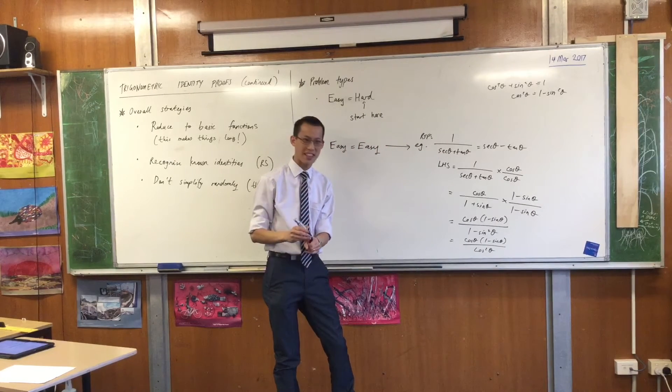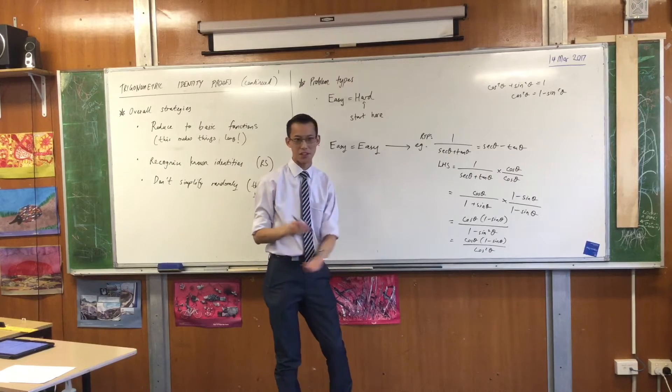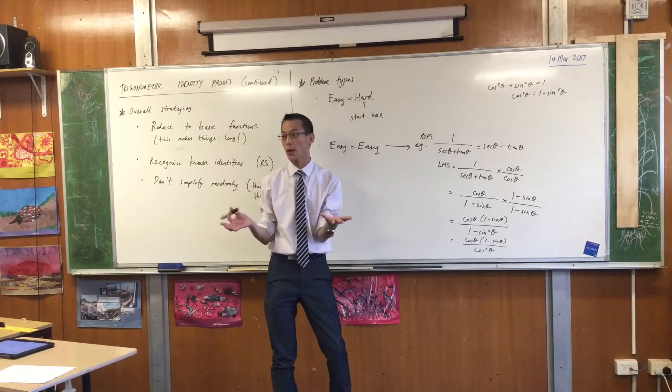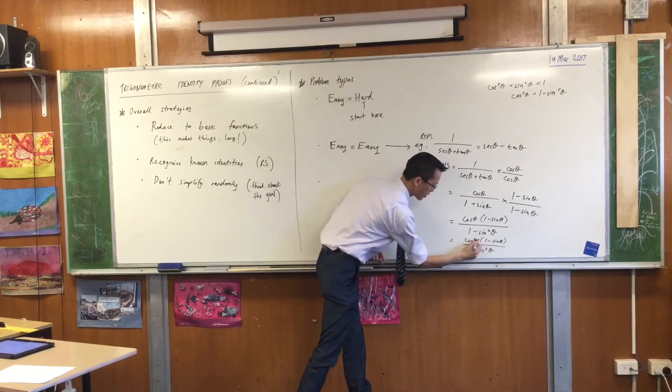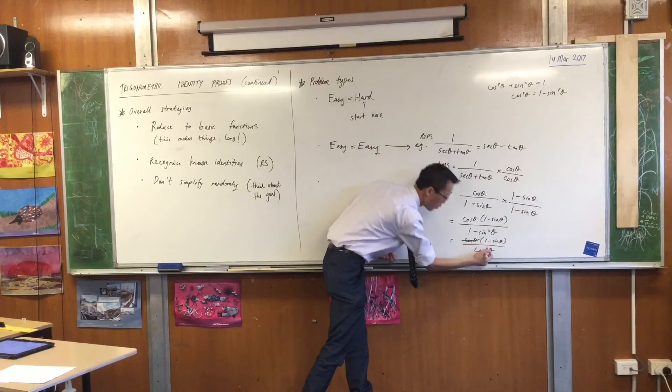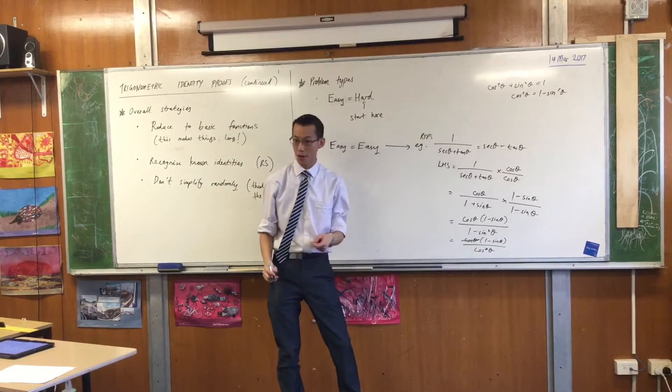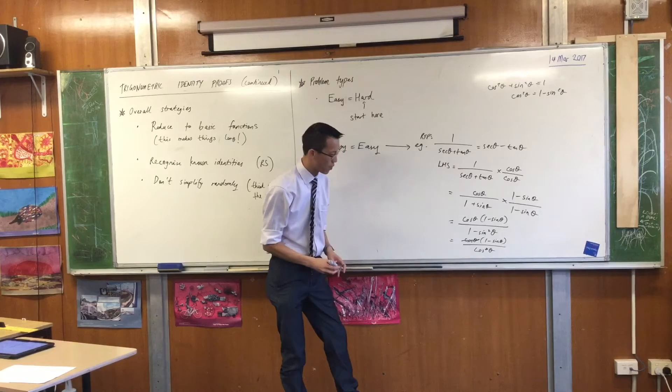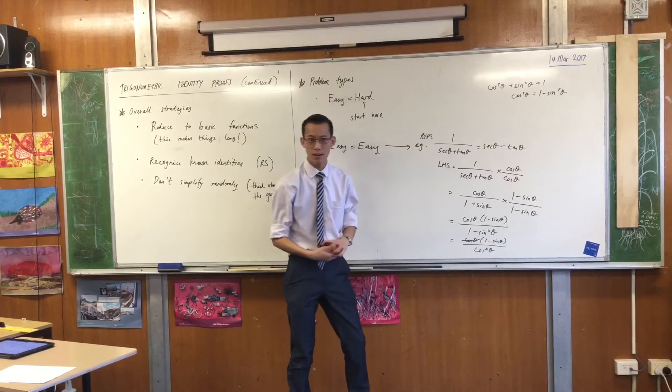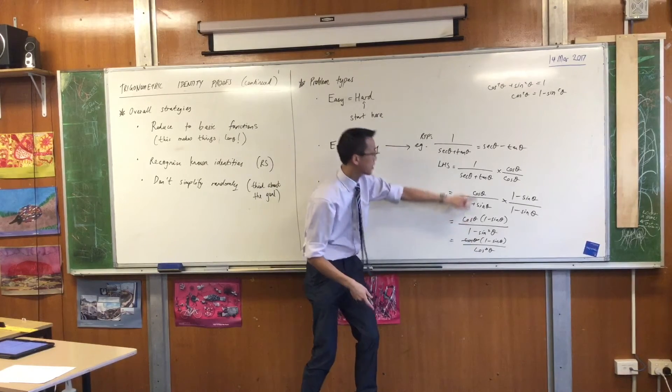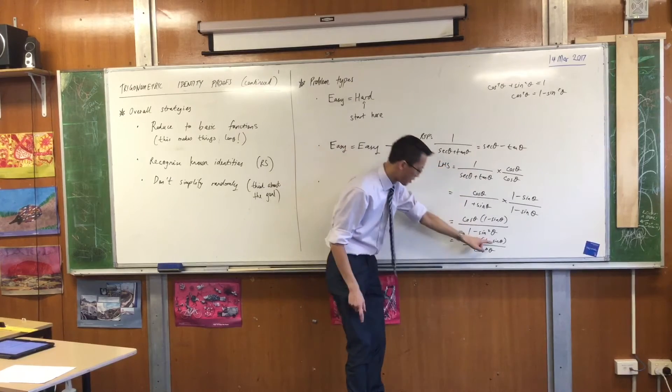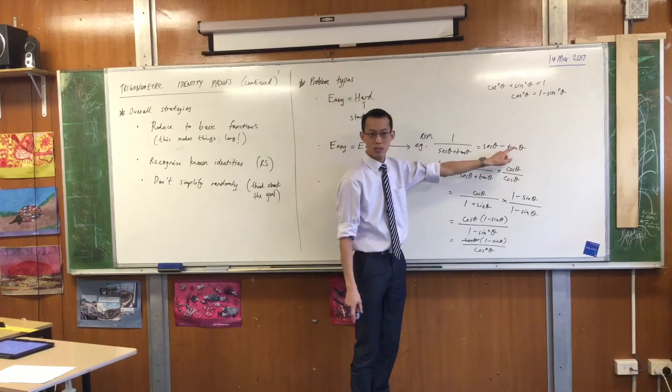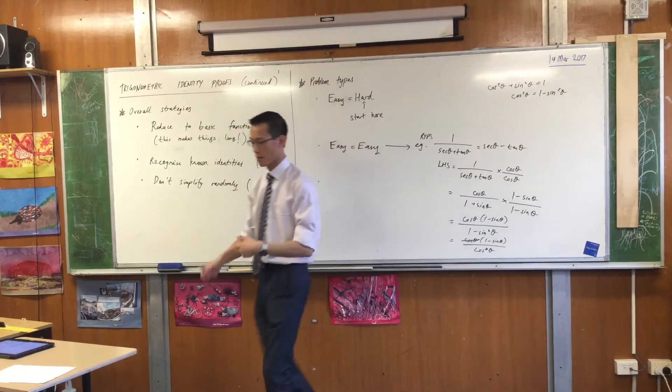Now I'm actually not going to finish this out, because I think you can actually, number one, I've run out of space on the board. Number two, I think you can see where this is going. I'm going to cancel, right? I'm going to lose the cos theta up the top, which means I lose one of the cos thetas down the bottom. What does that leave me with once I simplify things out? Yeah, the 1 over cos becomes sec. The sine over cos becomes tan, and you're home.